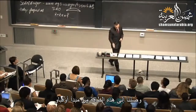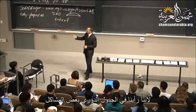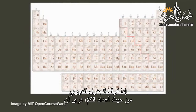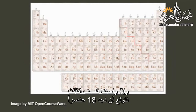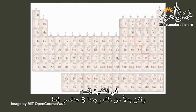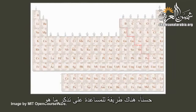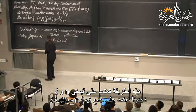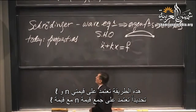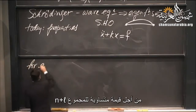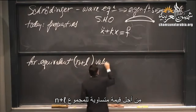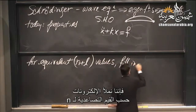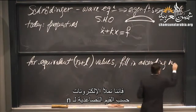We got into the Aufbau Principle because of problems in the periodic table. If we go purely by quantum numbers, we expect 18 elements in the n=3 shell, but instead we find only eight. The n+l rule helps remember the filling sequence: for equivalent n+l values, fill in ascending n.